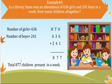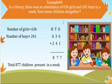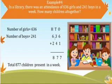Now another example. In a library there was an attendance of 636 girls and 241 boys in a week. How many children all together? So again focus: there are 636 girls and 241 boys. So we write here in the statement form: number of girls 636, number of boys 241. Then we write these 3-digit numbers in the place value chart according to their place value: 636 and 241.